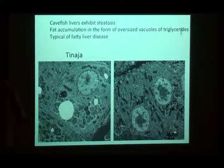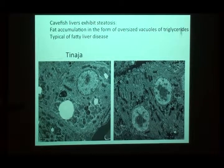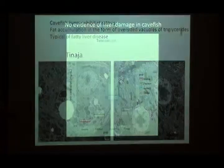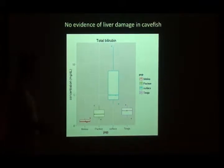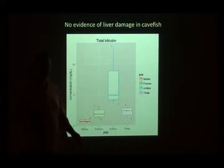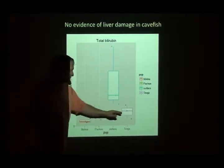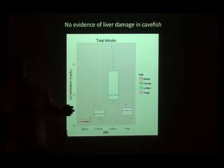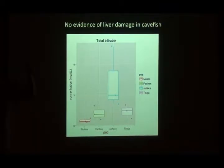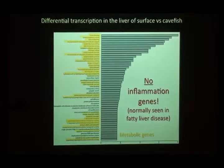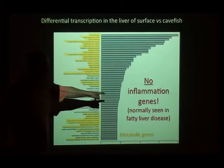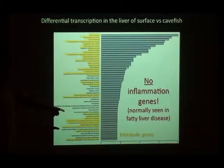In humans, this would be a very serious disease. But these fish are perfectly happy — they live as long as the surface fish and show no evidence of liver damage. In fact, if you give them enough food, the surface fish eventually start showing some liver damage with bilirubin and other liver enzymes released into the blood. The cave fish, no matter how fat they get, don't elevate bilirubin. There are no inflammation genes upregulated. RNA-seq experiments show they've basically evolved to have the fatty liver as a place to store fat — they've got the disease but they just don't care.